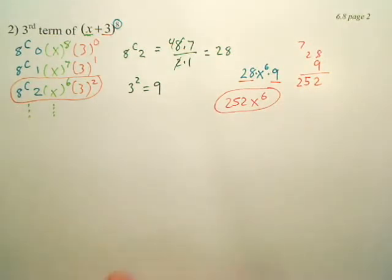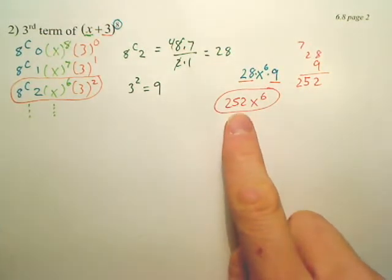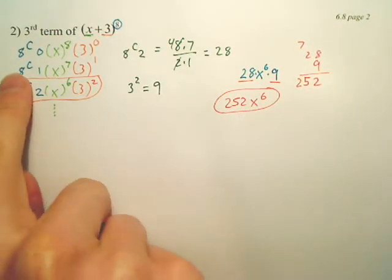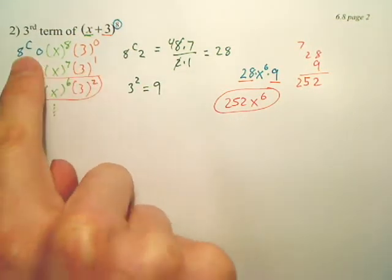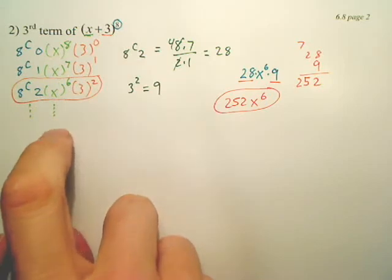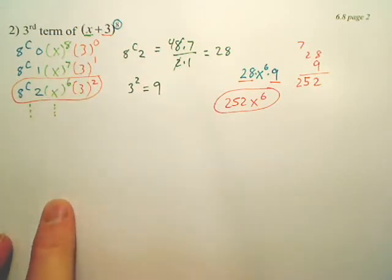If it asks for the coefficient of the 6th term, it would be 252. If I wanted the 2nd term, do you understand? I'd get this. If I wanted the 1st term, I'd get this. If I wanted the 7th term, I'd have to go all the way down to the 7th term.